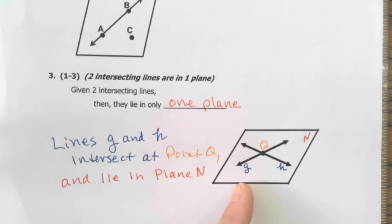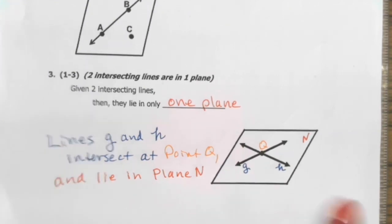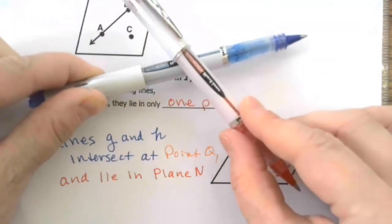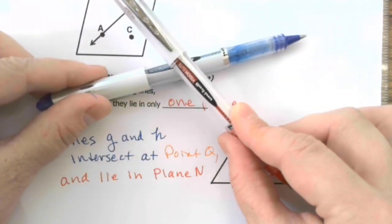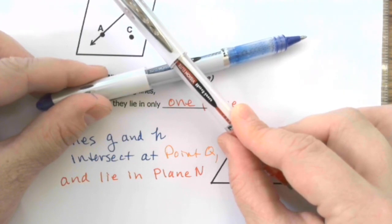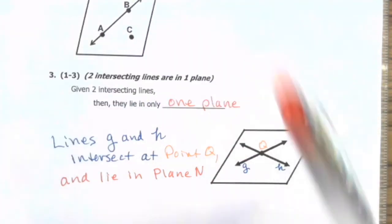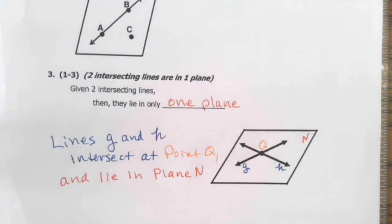Any two intersecting lines can be contained in only one plane. Again, think of a piece of paper. If you have two intersecting lines, you can only fit those lines on one flat piece of paper. There isn't another way to put them on a piece of paper. It has to only be the one. And that's all this is saying. It's only one plane. All right, that is the end of the notes.